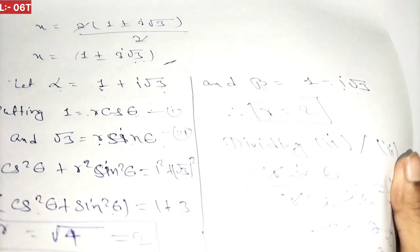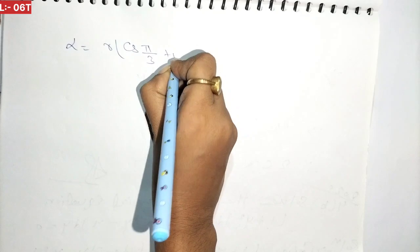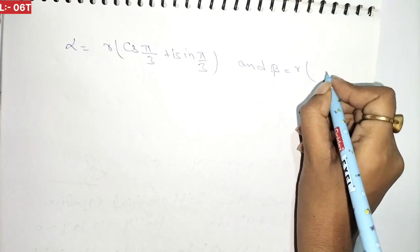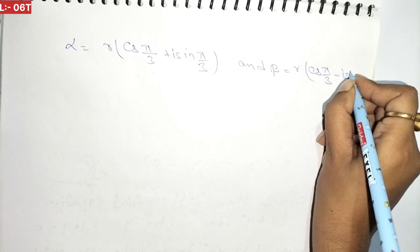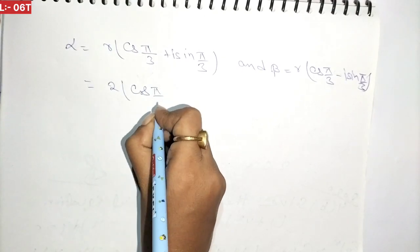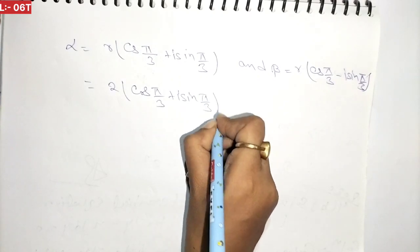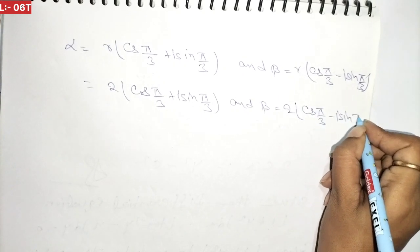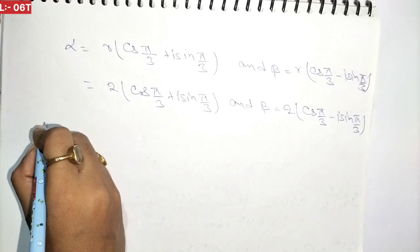Now substituting back, taking r common: alpha equals r(cos(π/3) plus i sin(π/3)) and beta equals r(cos(π/3) minus i sin(π/3)), which gives alpha equals 2(cos(π/3) plus i sin(π/3)) and beta equals 2(cos(π/3) minus i sin(π/3)).